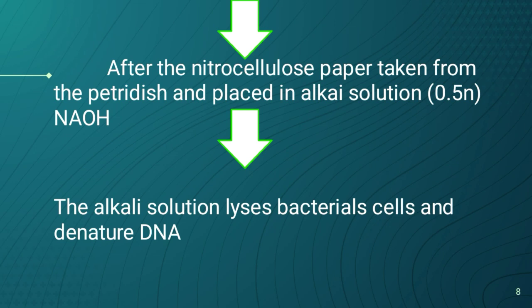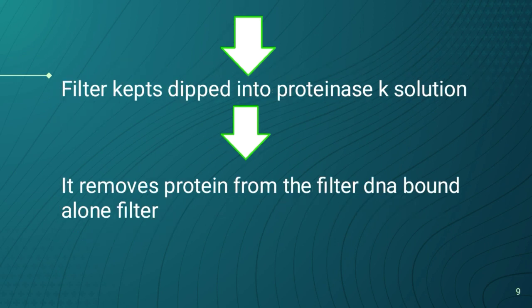After placement, the nitrocellulose paper is taken from the petri dish and placed in an alkaline solution to denature the bacterial cells and DNA content. The filter paper is then dipped into proteinase K solution, which lyses and denatures the proteins, removing them from the DNA so that only DNA remains bound to the filter.